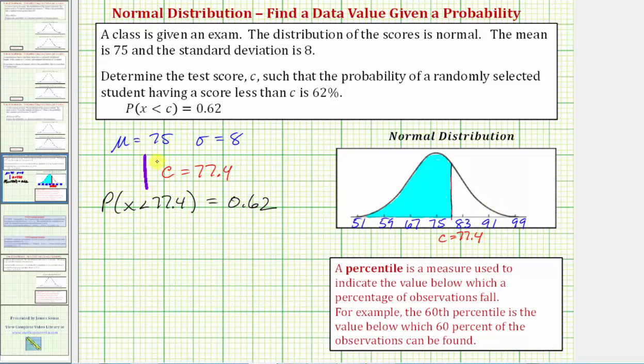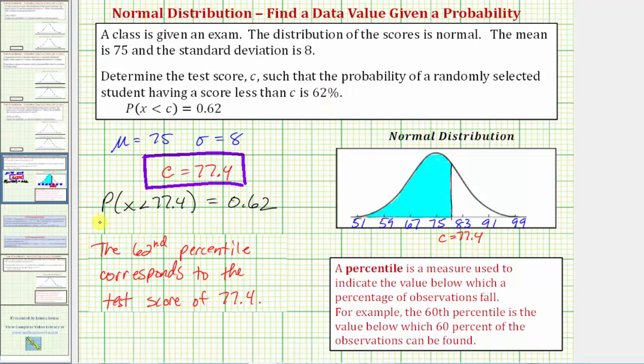So this is our answer, but before we go I also want to talk about percentile. A percentile is a measure used to indicate the value below which a percentage of observations fall. For example, the 60th percentile is the value below which 60 percent of the observations can be found. So in this case, because 62 percent of the data falls below the test score of 77.4, the 62nd percentile corresponds to the test score of 77.4.